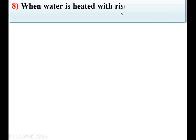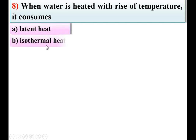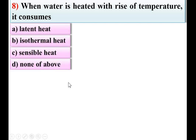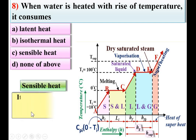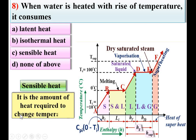Next: when water is heated with rise of temperature, it consumes option latent heat, isothermal heat, sensible heat, or none of the above. Here we are talking about the C-D portion, and that amount of heat is known as sensible heat. HF is called sensible heat — it is the amount of heat required to change temperature. When you supply heat and the temperature changes, it is called sensible heat. C is the right answer.